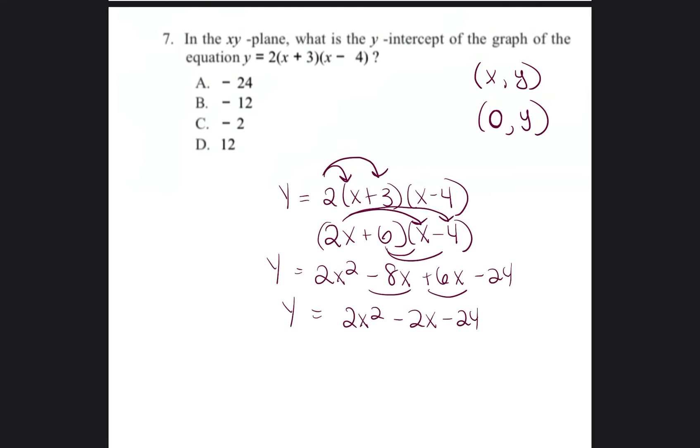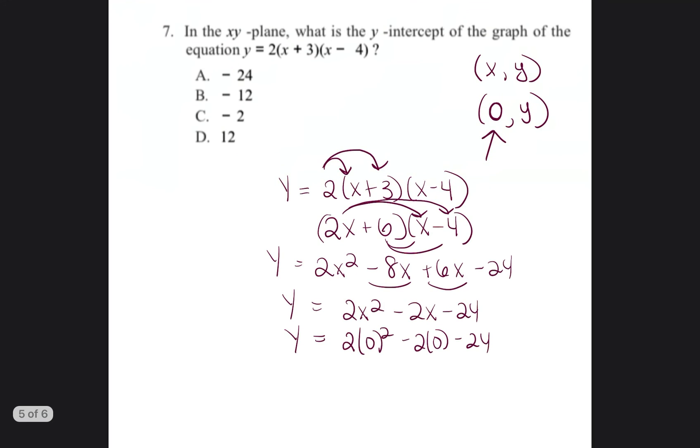Now that we've multiplied it all out, we know that when we're trying to find the y-intercept of a graph, you just enter 0 in for the x's. So wherever you see an x, we're just going to put a 0. So 2 times 0 squared minus 2 times 0 minus 24 equals y. 0 squared is 0. Negative 2 times 0 is 0. And then you bring down negative 24. So y equals negative 24. So when x equals 0, y equals negative 24. So the y-intercept would be negative 24, and the answer would be A.